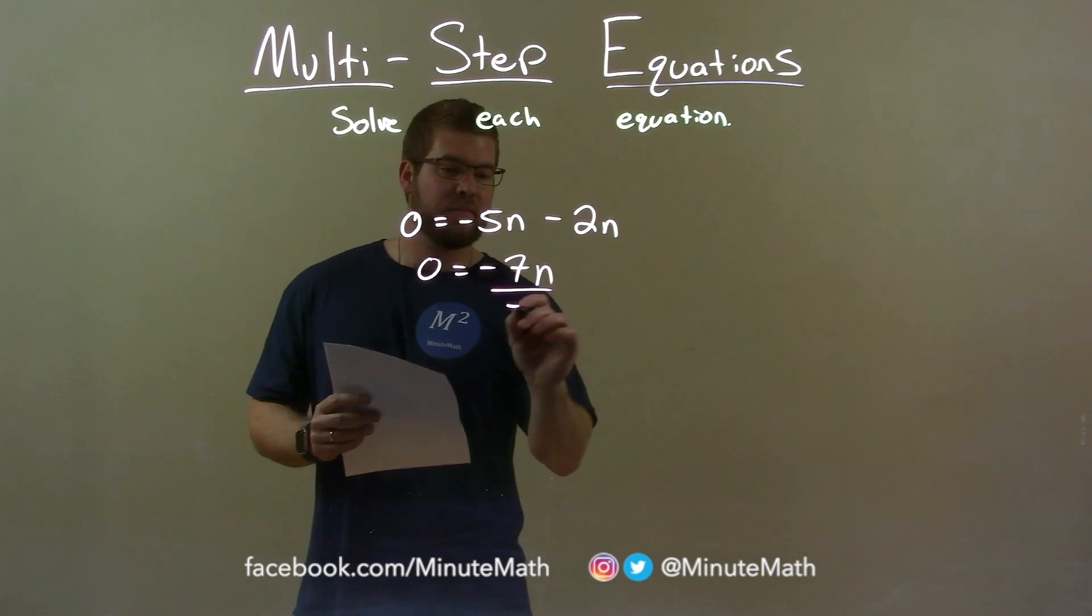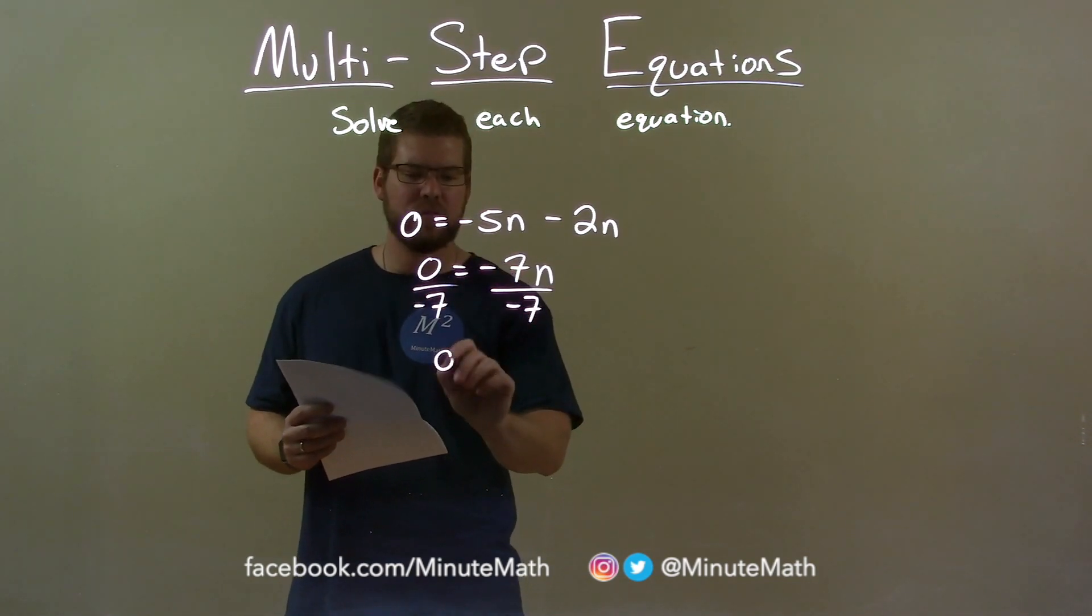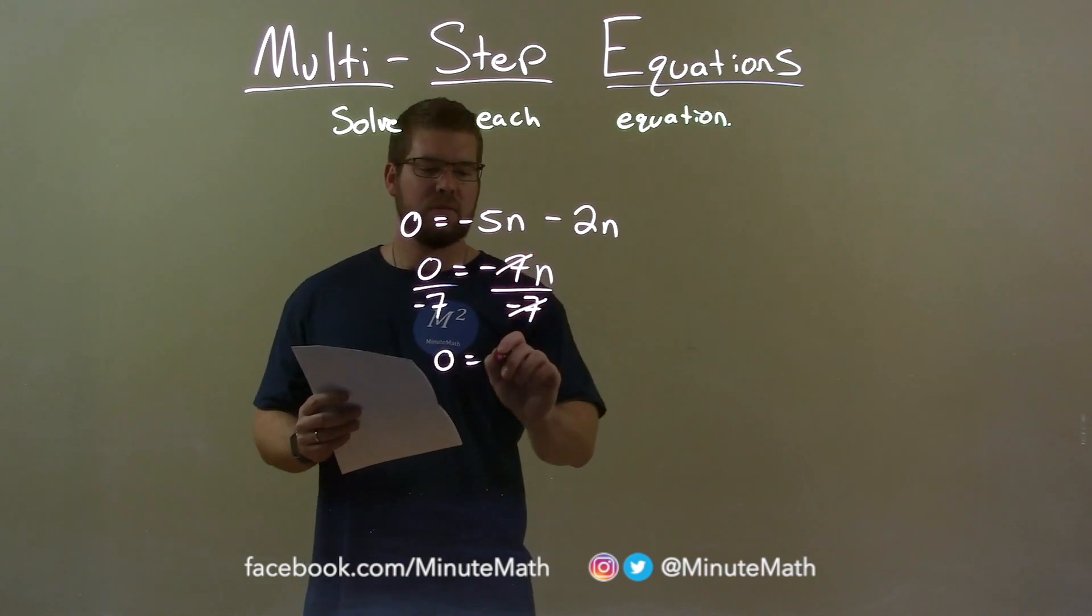Divide both sides by negative 7, and 0 divided by negative 7 is still 0. The 7's cancel. We have n by itself.